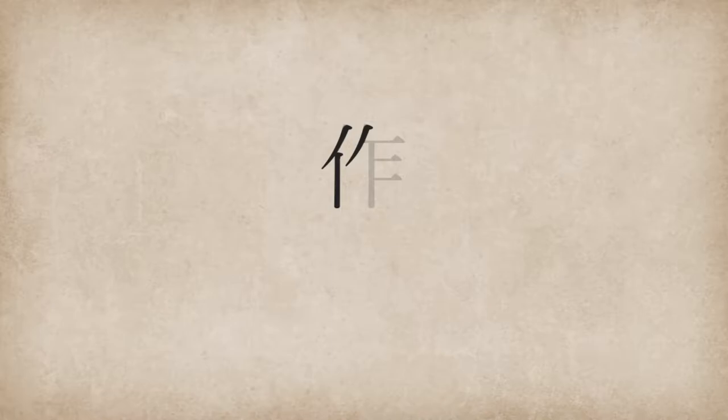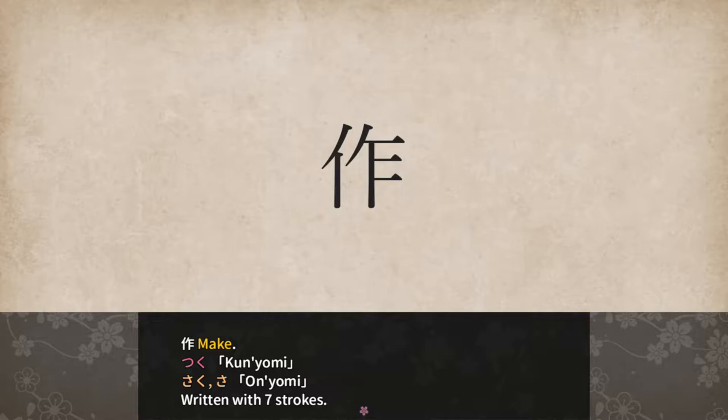Make. Tsuku for kunyomi and saku or sa for onyomi, written with 7 strokes. The shape of saku looks like a hammer and saw you would use to make something.